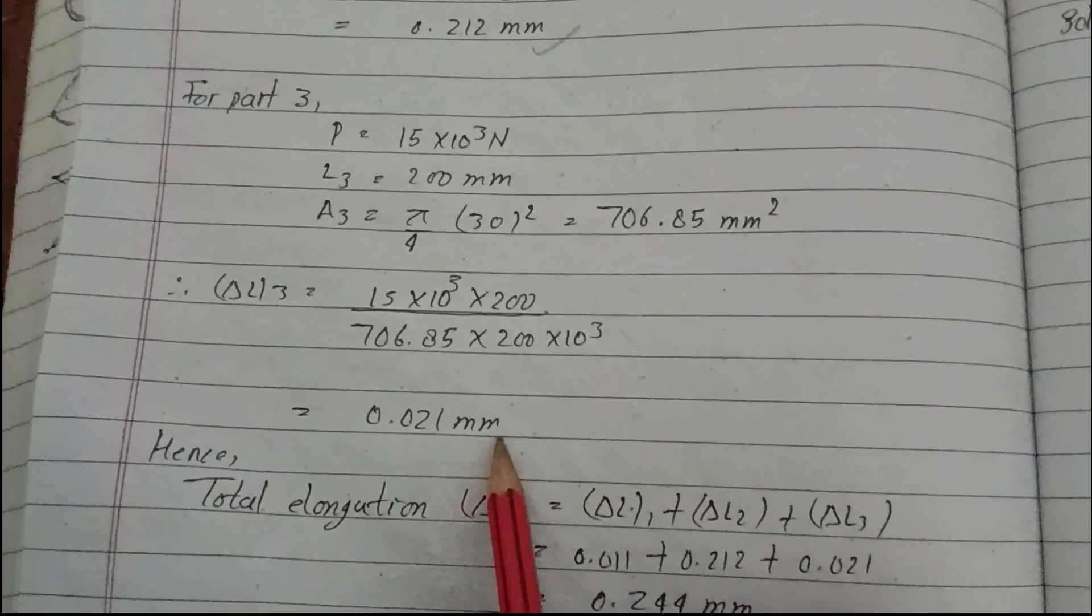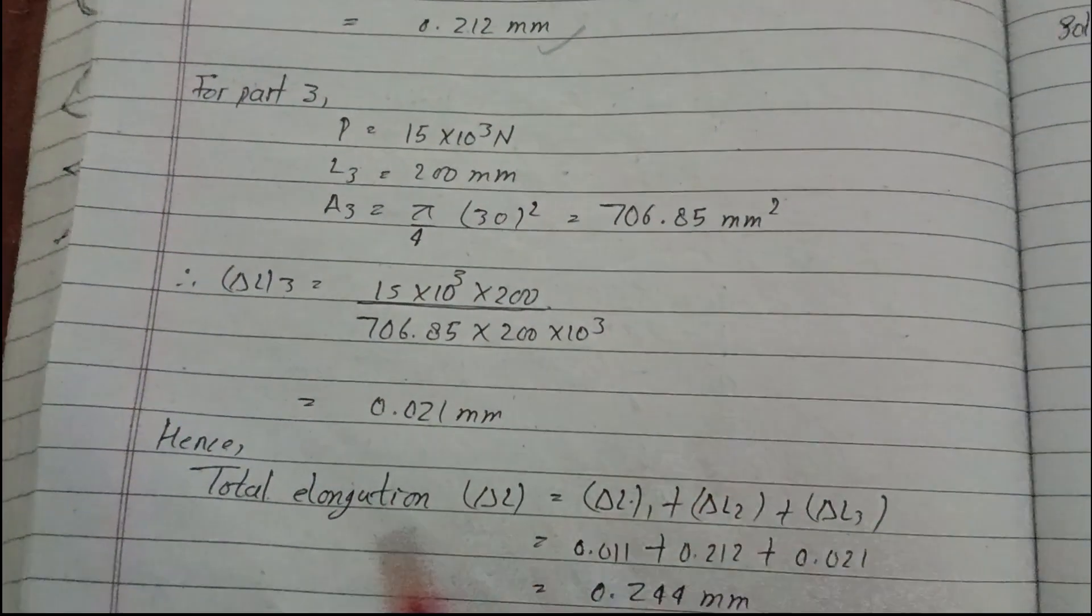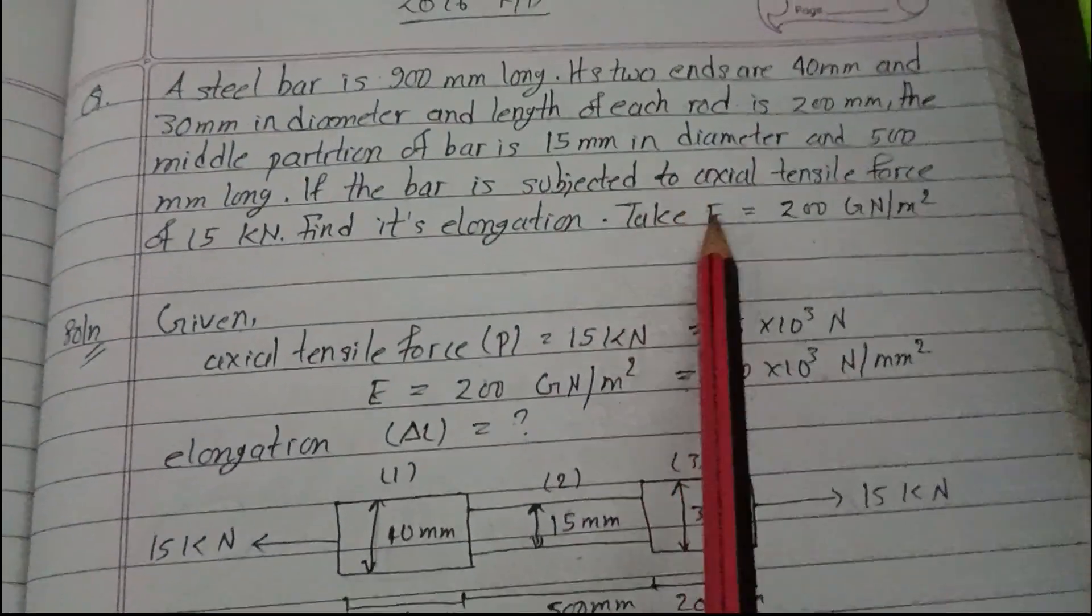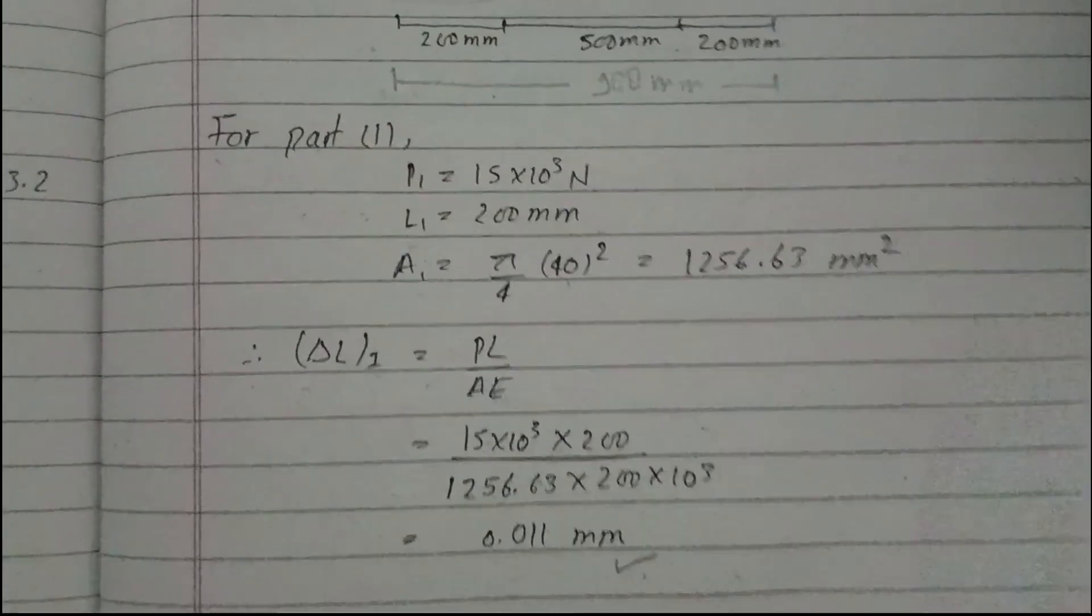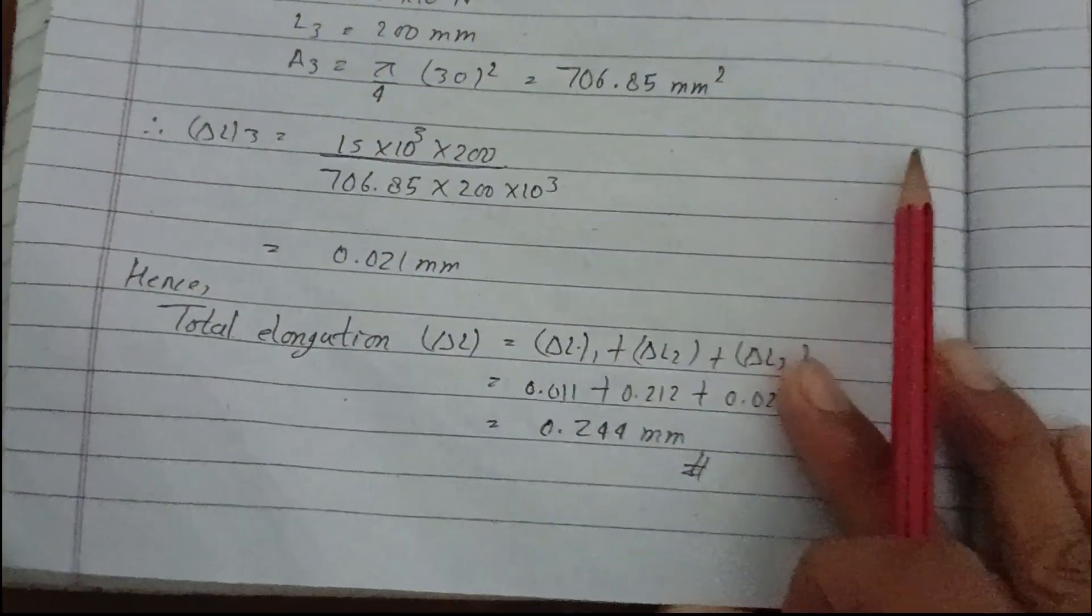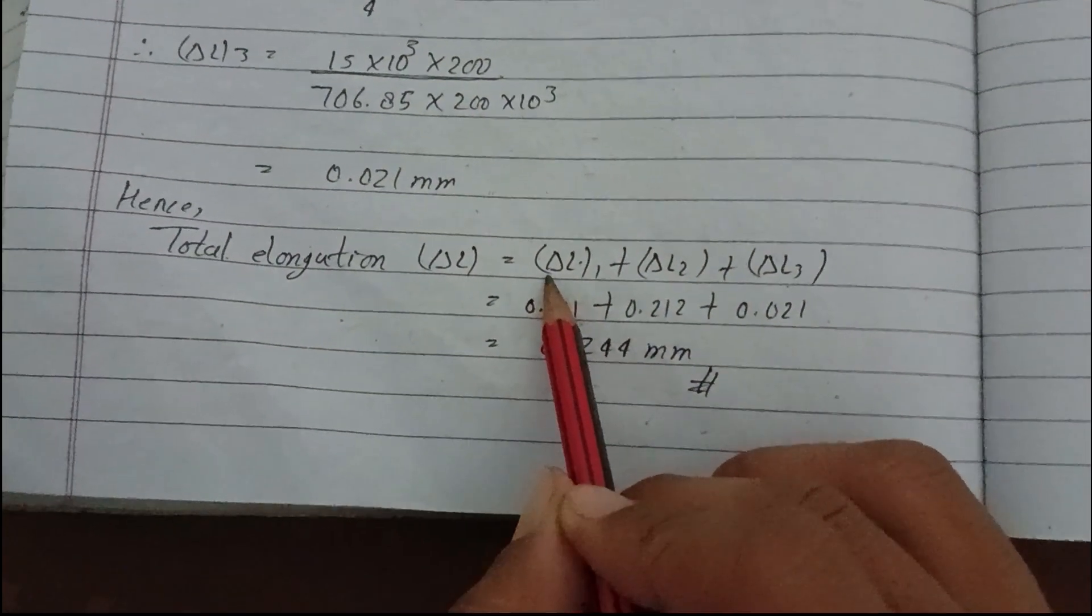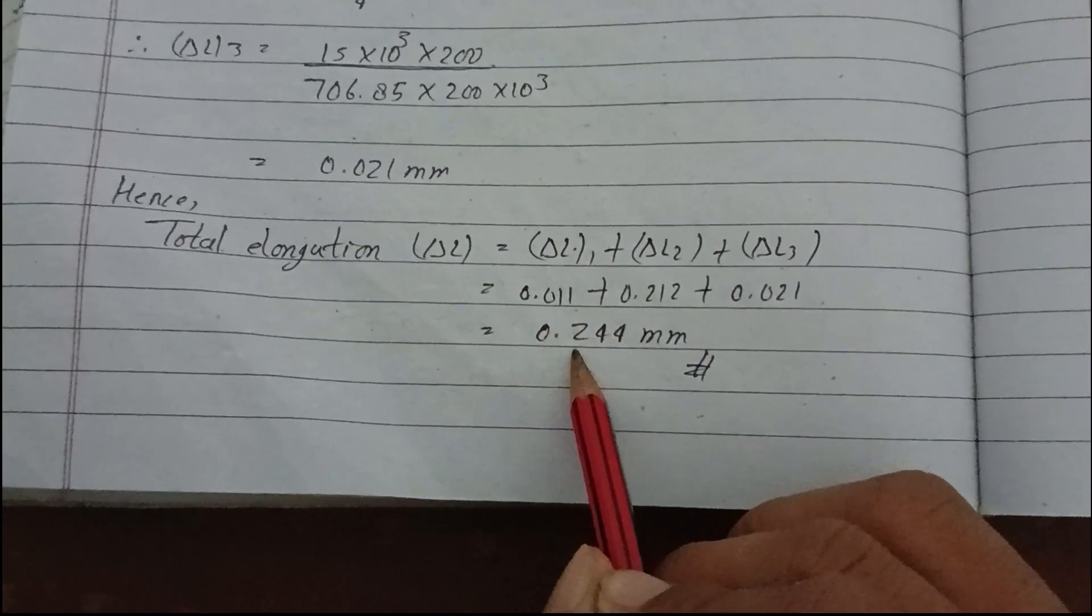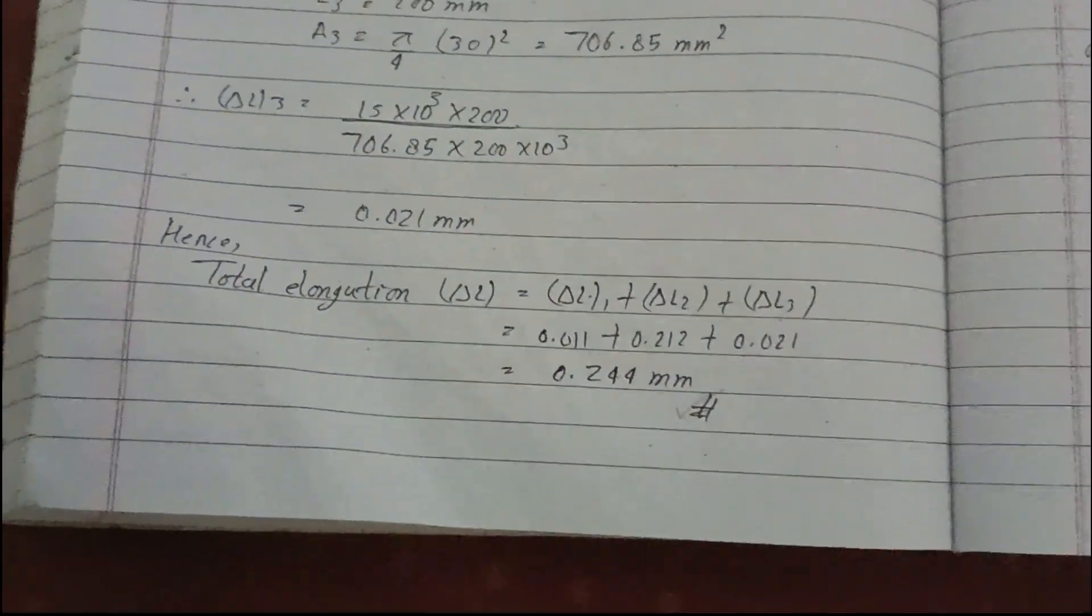Hence, the total elongation is the sum of elongations from parts one, two, and three. Since this is an axial tensile force, all portions are in tension. Total elongation equals ΔL1 + ΔL2 + ΔL3, giving a final answer of 0.244 mm.